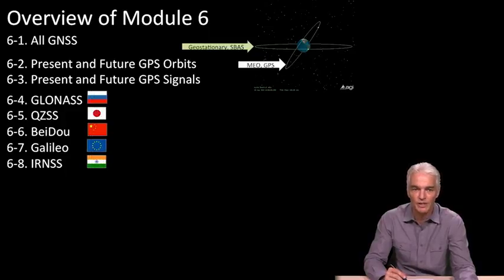And then we'll go through the systems one at a time. GLONASS from Russia, QZSS from Japan, Beidou from China, Galileo from the European Union, and IRNSS, the Indian Regional Navigational Satellite System from India. So we'll look at each of those in turn, what their orbits are like, what their signals are like.